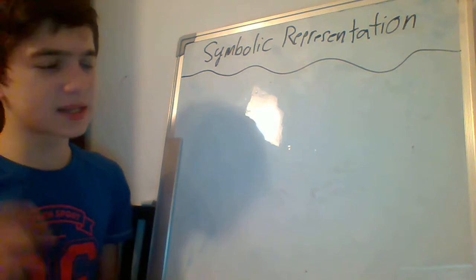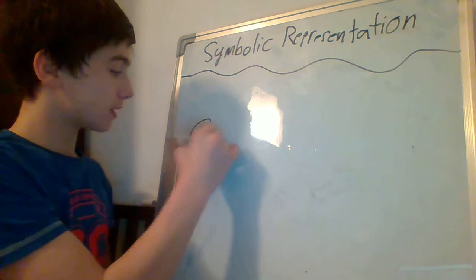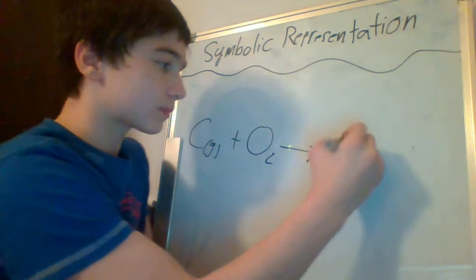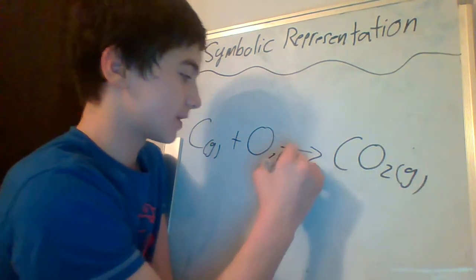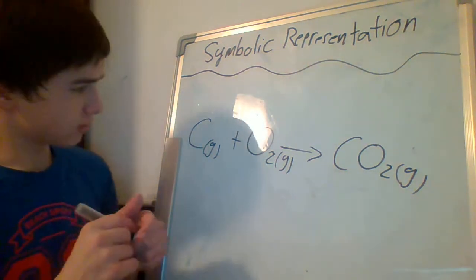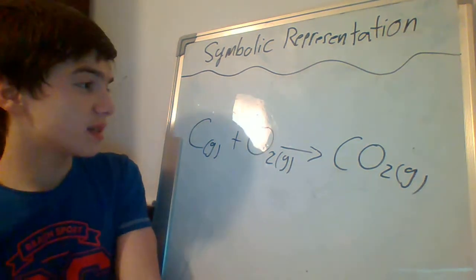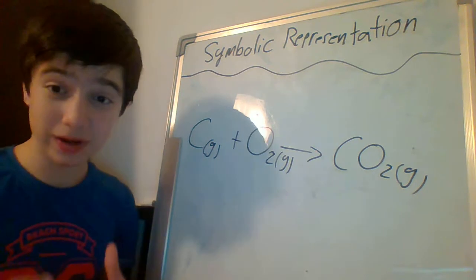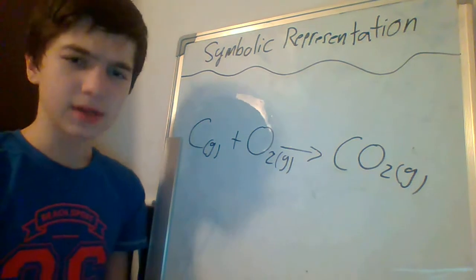Let's take an example of carbon dioxide. Carbon combusting with oxygen gas, and we're going to get carbon dioxide, which is also a gas. So that's symbolic representation — we just wrote that equation for the reaction of carbon and oxygen to form carbon dioxide.